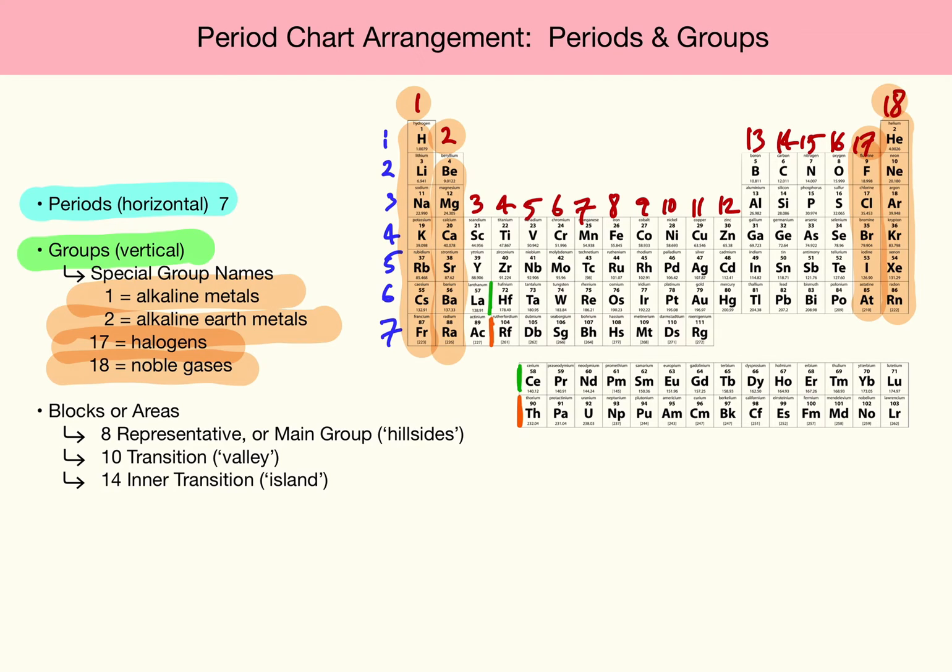There are also two named Periods. The top row of our Island, which comes right after Lanthanum, where it's spliced in - that period is known as the Lanthanides. And the second row of our Island, of our Inner Transition, which splices in right after Actinium, is known as the Period of Actinides. So the groups and periods we've named are Alkaline Metals, Alkaline Earth Metals, Halogens, Noble Gases, Lanthanides, and Actinides.